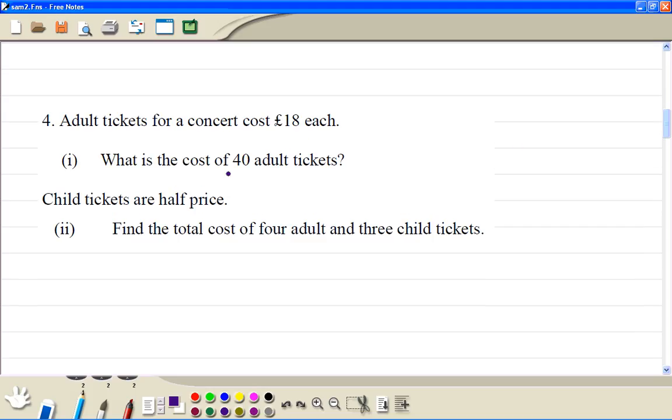Number 4. Adult tickets cost £18. The cost of 40 will be 18 times 40, which is 720. So we have 0, 0, then put 0. 4 times 8 is 32, carry 3. 4 times 1 is 4 plus 3 is 7. So the cost is £720.